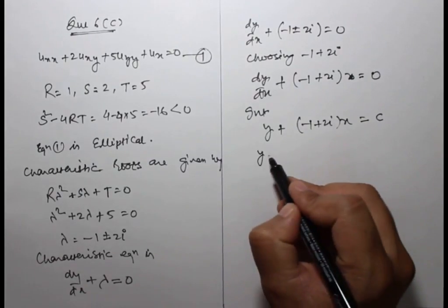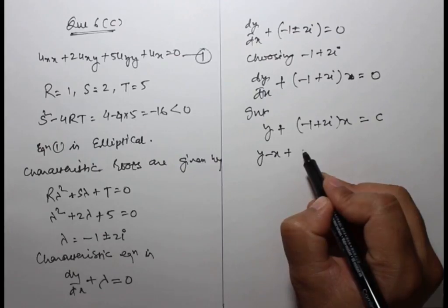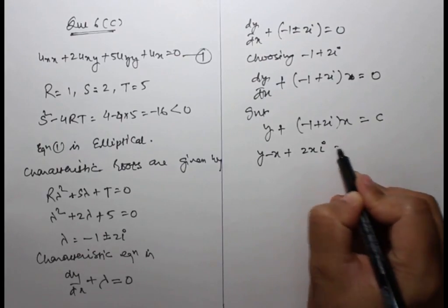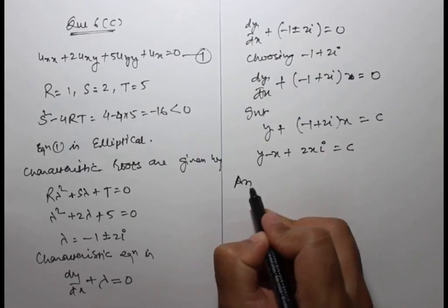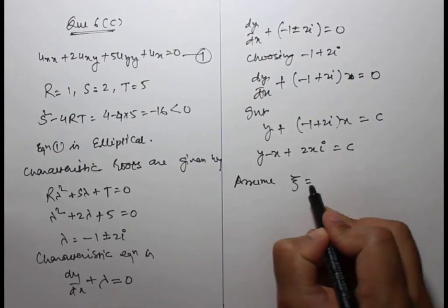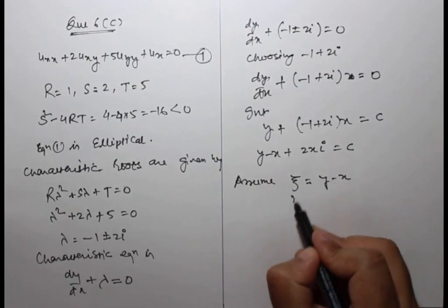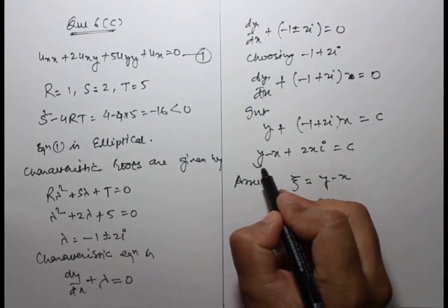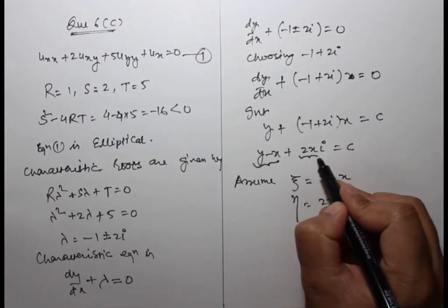Integrating with respect to x: y plus (minus 1 plus 2i)x equals constant c. So y minus x plus 2ix equals c. We assume ξ equals y minus x (real part) and η equals 2x (imaginary part).